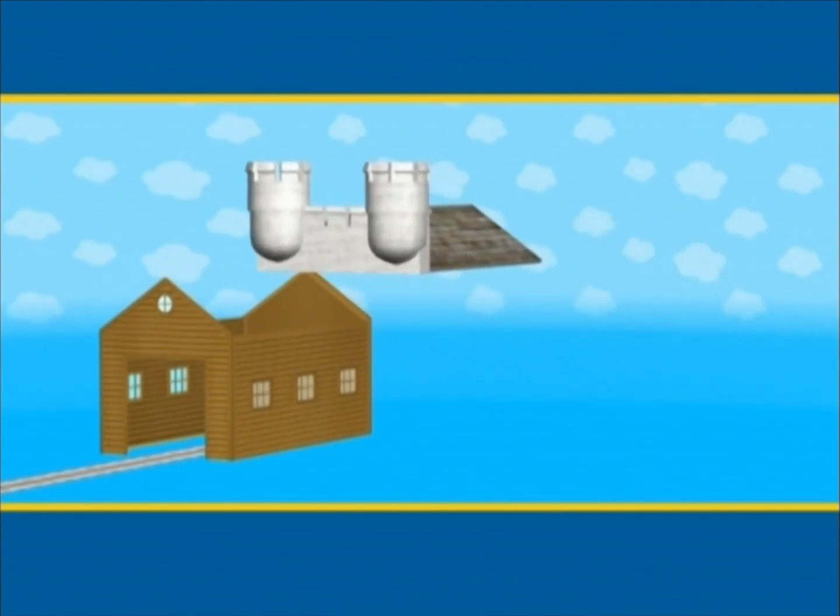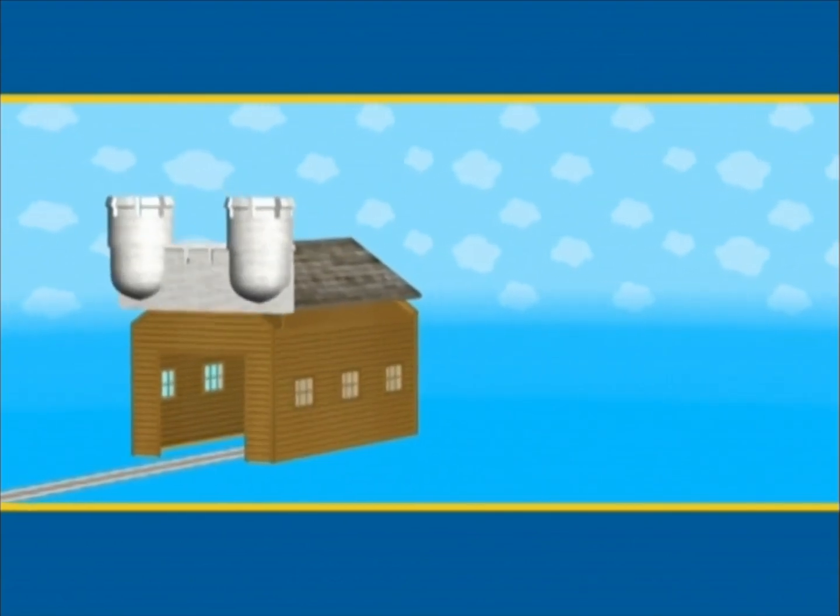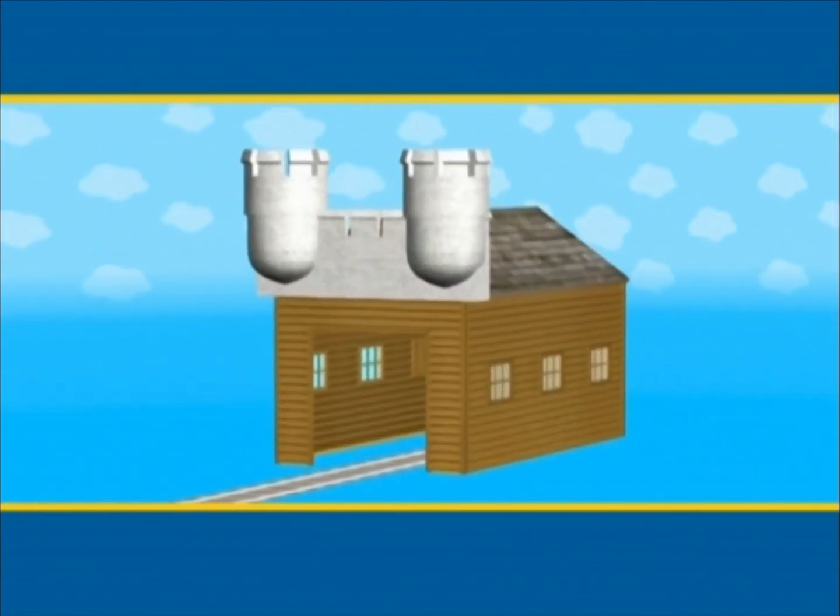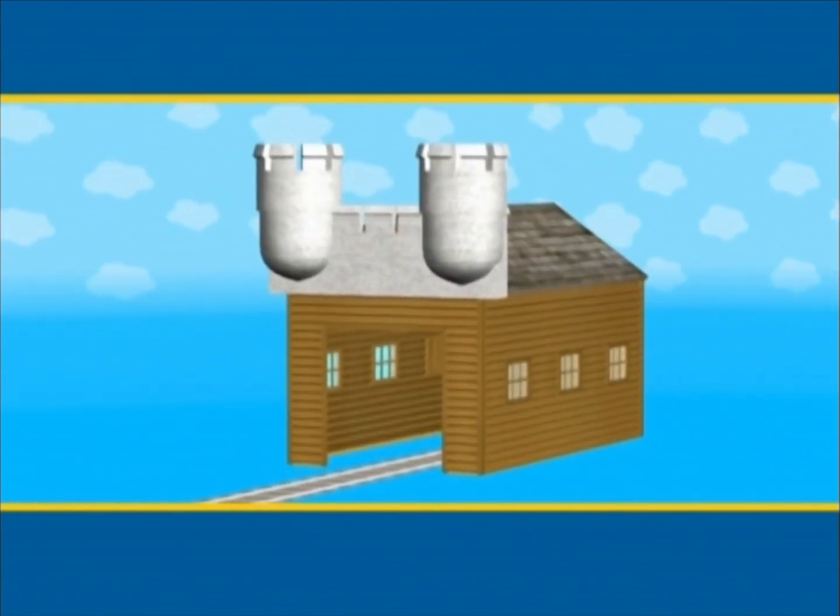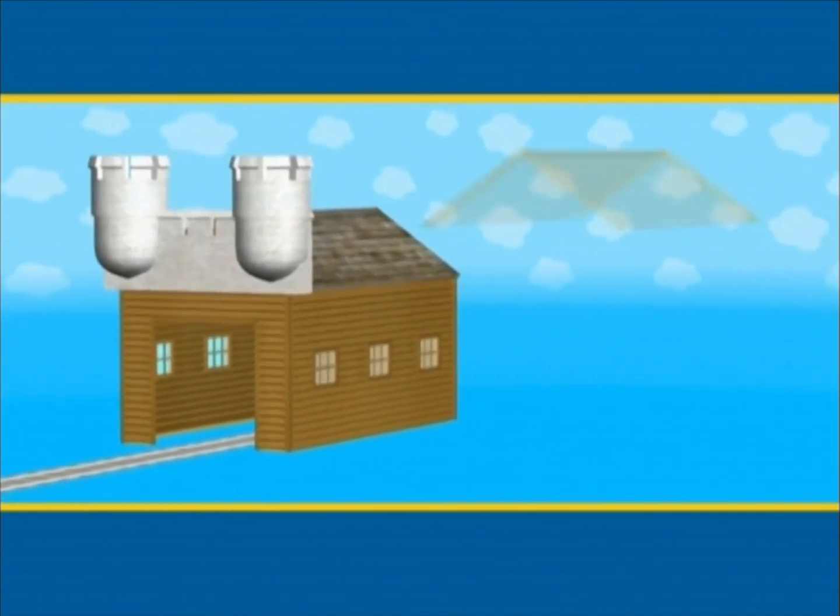What about this one? This roof has round turrets made of bricks. Does that look right? No, that roof has turrets. Turrets go on a castle, not on a shed.